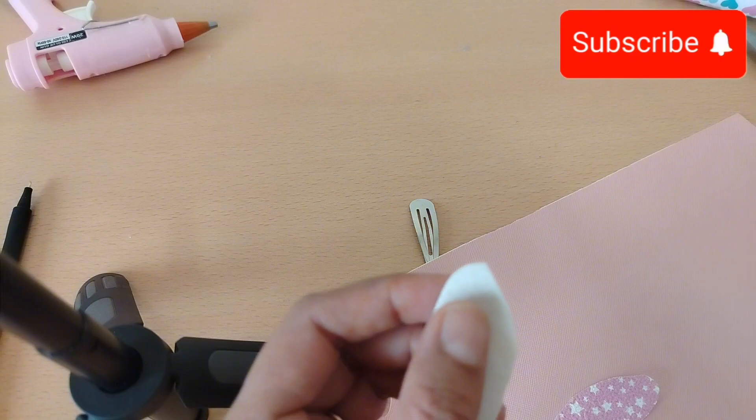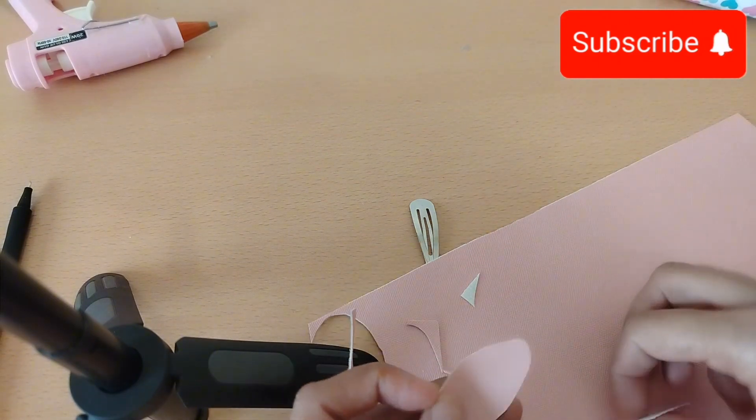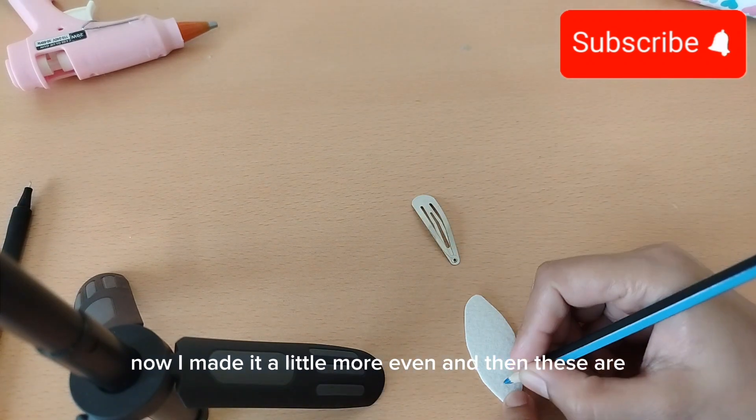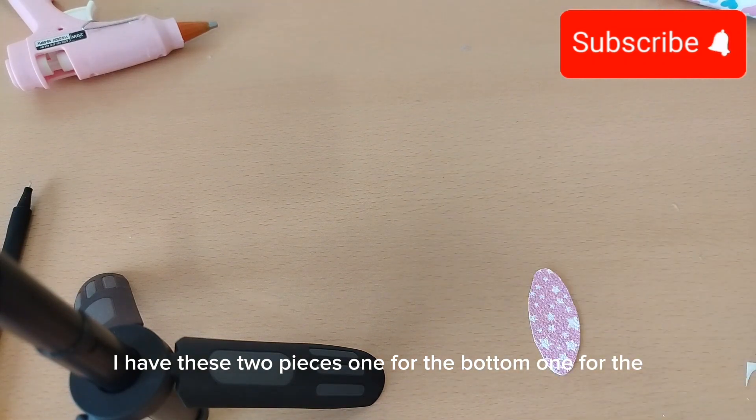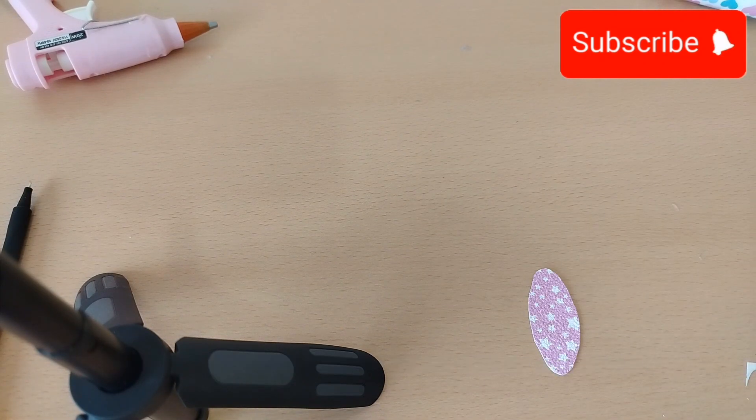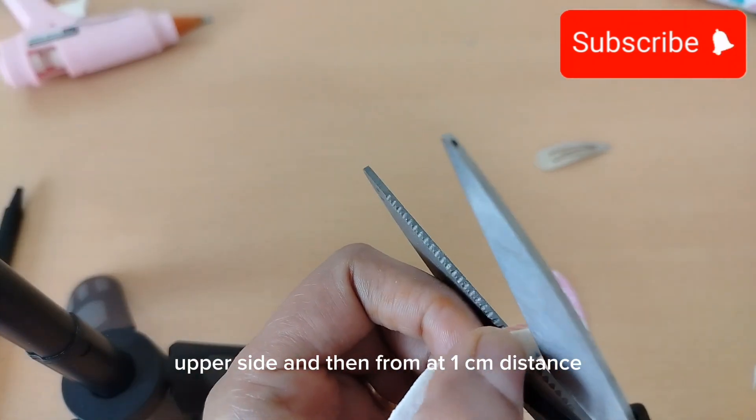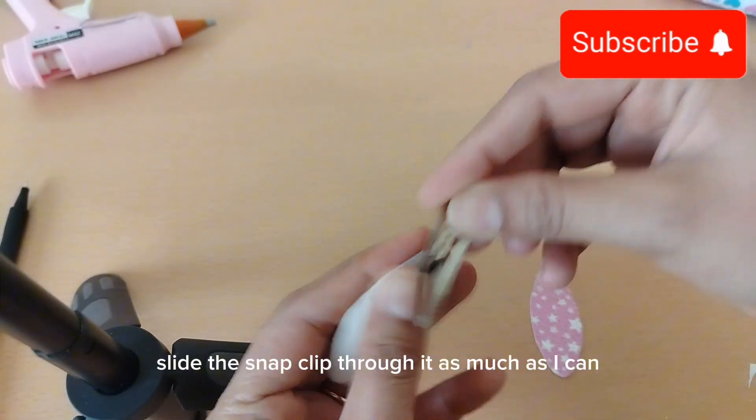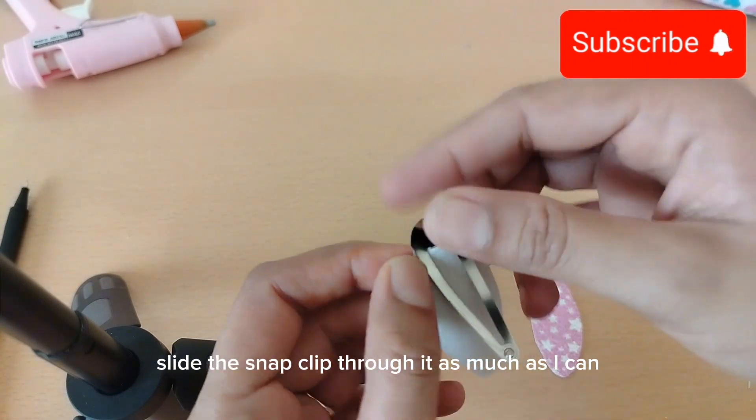Here it is. I made it a little more even. Now I have these two pieces - one for the bottom, one for the upper side. At one centimeter's distance, I will cut this slit after marking it, and then I will slide the snap clip through it, push it as much as I can, and then glue it.